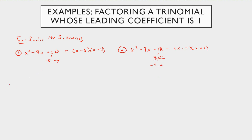Let's look at x squared plus 10x plus 21. What two numbers multiply to 21 and sum to 10? That's 7 and 3. So this is just x plus 7 times x plus 3.